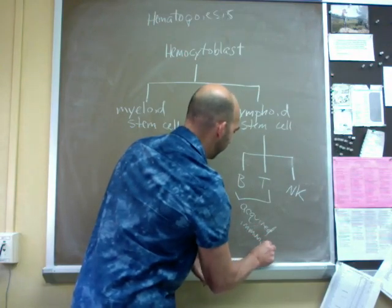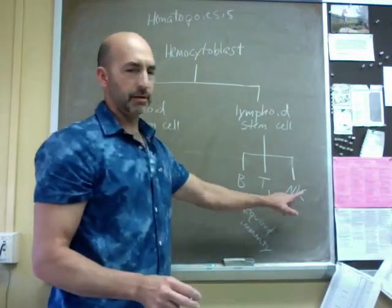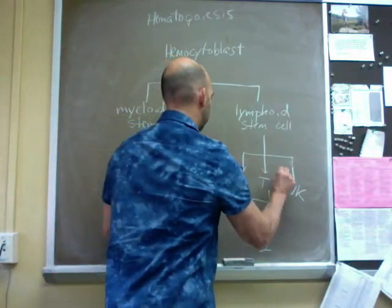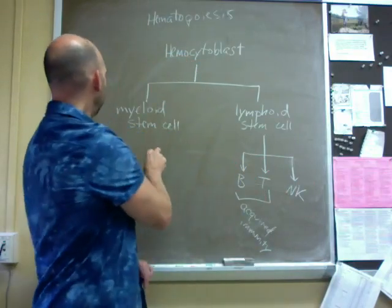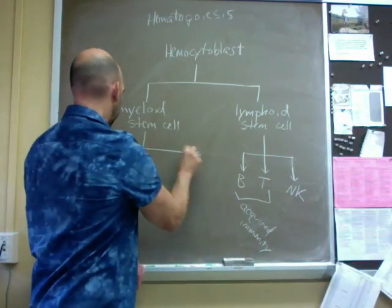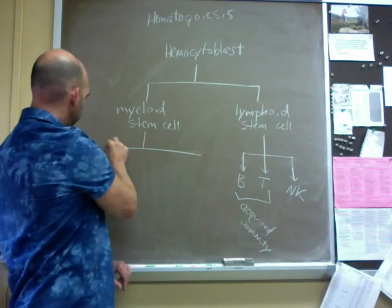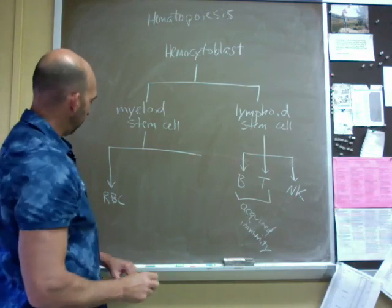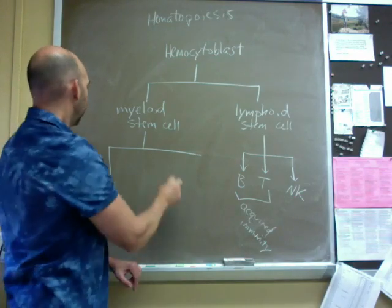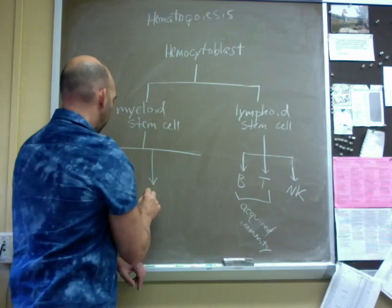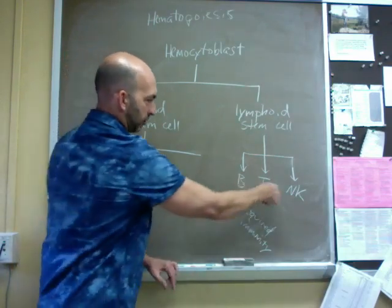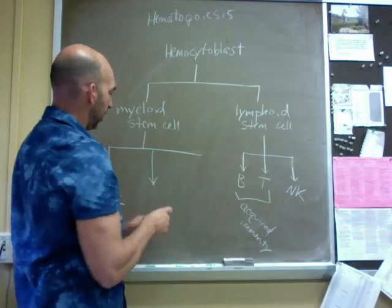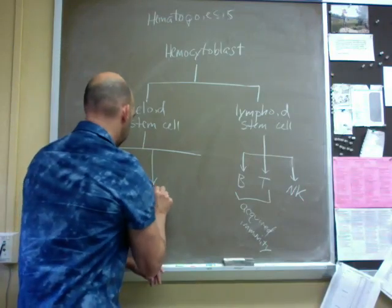Only the B and T lymphocytes are acquired immunity. In other words, they provide acquired immunity. The NK cells are innate immunity. The myeloid stem cells produce the red blood cells, the other white blood cells—these are white blood cells, B, T, and NK are white blood cells—but the other white blood cells.